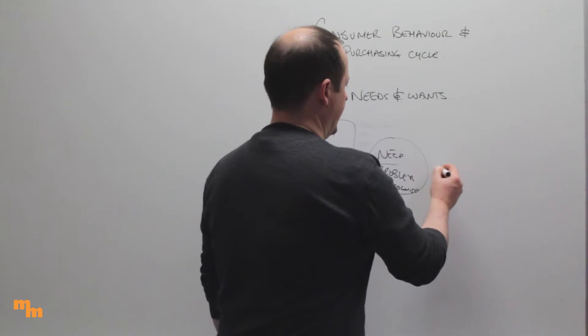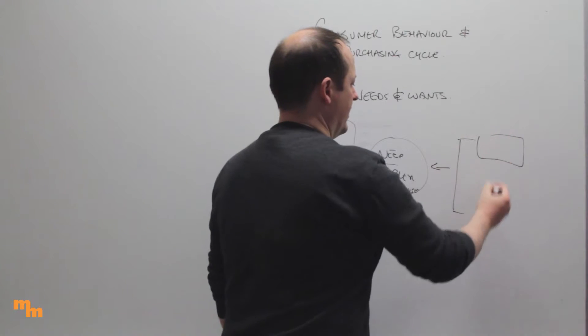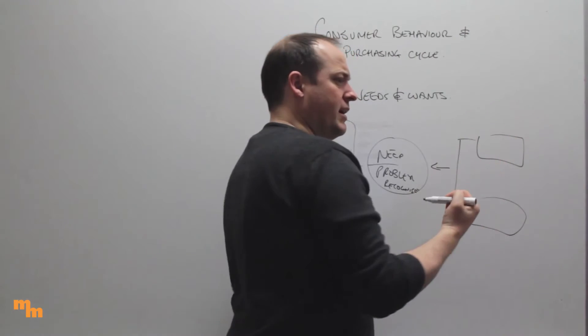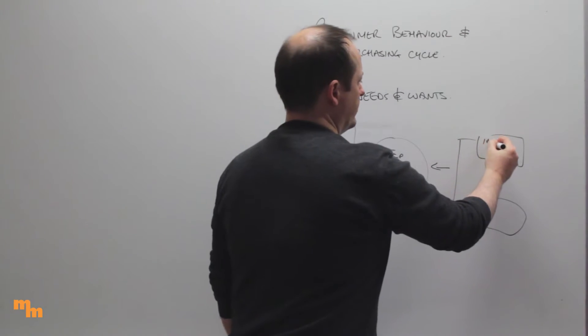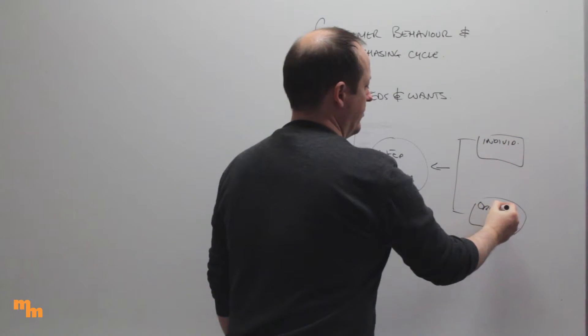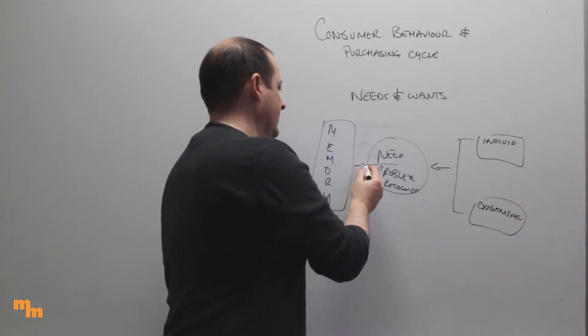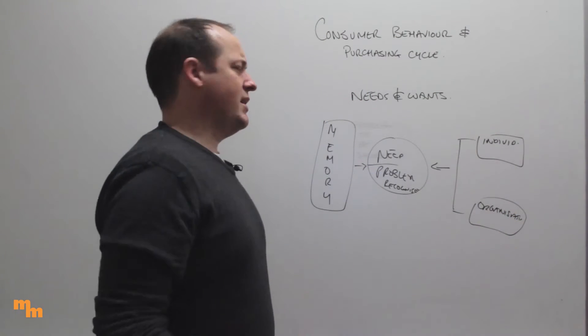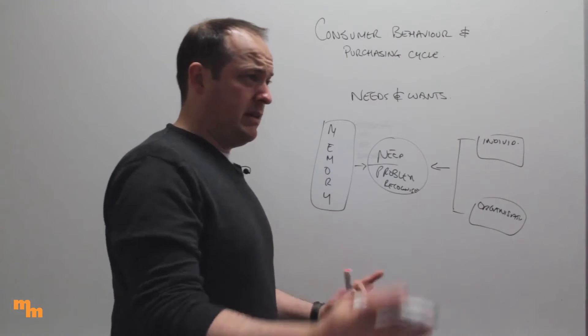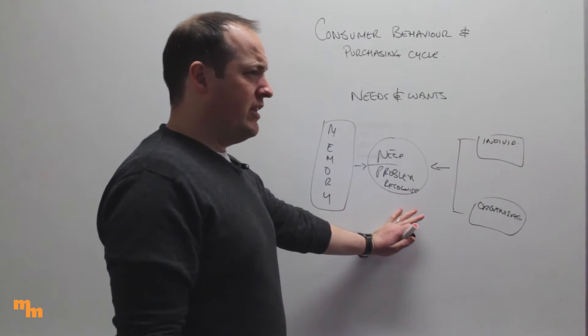What's feeding into that and what's going to shape that is the stuff we've already talked about, which is about thinking about their individual influence and the organizational influences that we can bring to bear. There's this thing that they know, they've seen something in the past, they understand stuff in memory. I've been in this position before, there's various things that I have here. I've worked out that I have a need or a problem that needs to be fulfilled.